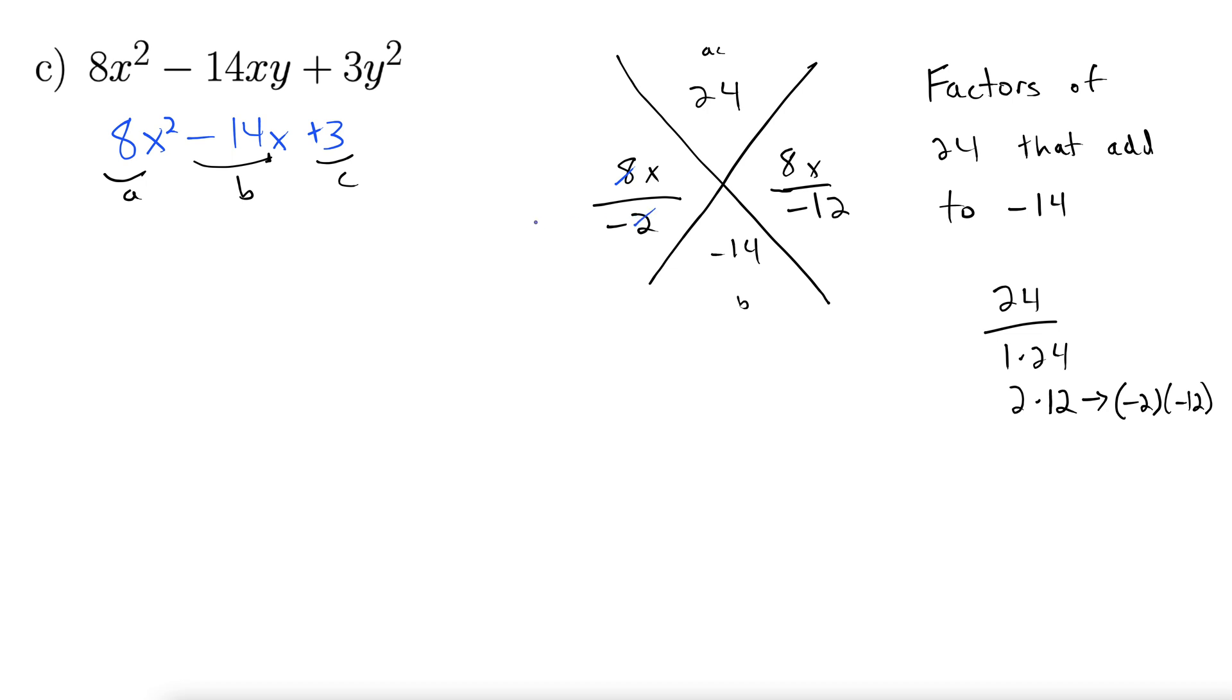And now we simplify these down. 8 and 2 can simplify. We can get a 2, cancel out of both of those. So we have 4x over negative 1 here. And here we can get a 4 out of both of these. That will leave us with a 2 up top, a 3 on the bottom. So 2x over negative 3. And now we're ready to read off our factors. We read them from the top down. So this is 4x minus 1 and 2x minus 3.